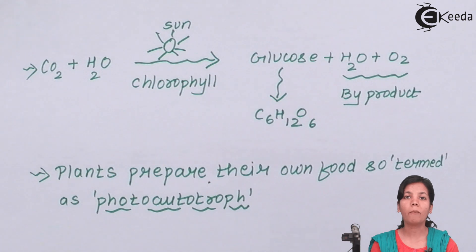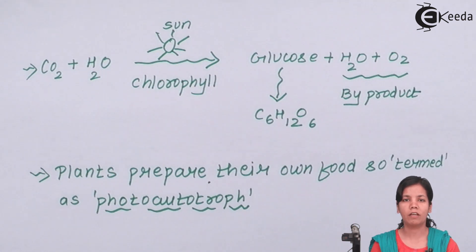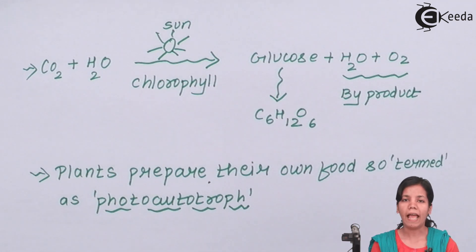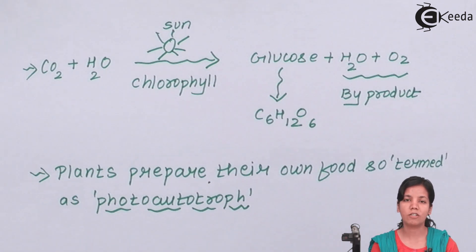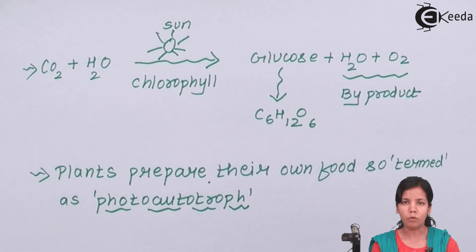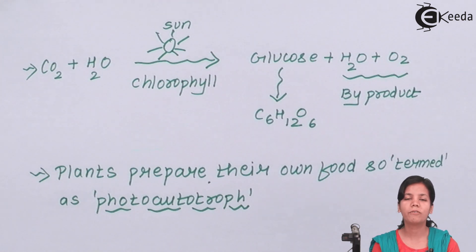In this part of the chapter, we studied how plants basically cook or prepare their food. The main product of this process is glucose (C₆H₁₂O₆). I hope you are all clear with the concept of photosynthesis. Thank you.